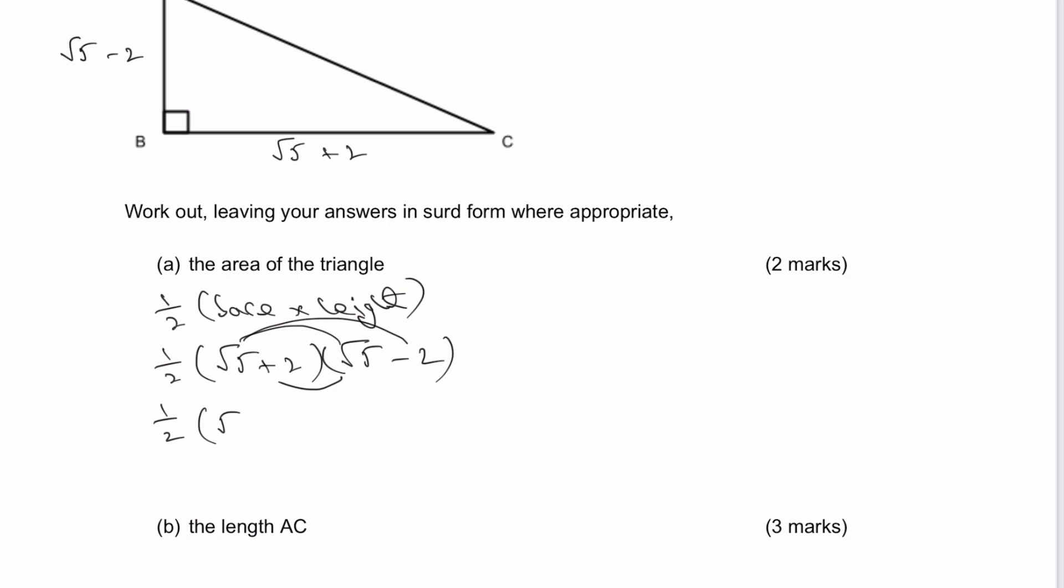So the only thing I've got left then is positive two times negative two, and that's going to be a positive times a negative is a negative, so that's going to be negative four. So in the brackets, I've now got a half multiplied by one. Therefore, the area of the triangle must equal a half of a meter squared, and that would be worth two marks on this particular question.